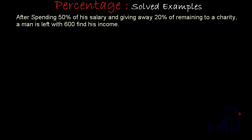We have a problem to solve and we are going to solve it in three ways. First is a very systematic way, in the second we will learn a shortcut, and in the third method we are going to solve it using fractions. The problem statement says: after spending 50% of his salary and giving away 20% of the remaining to a charity, a man is left with 600. Find his income.